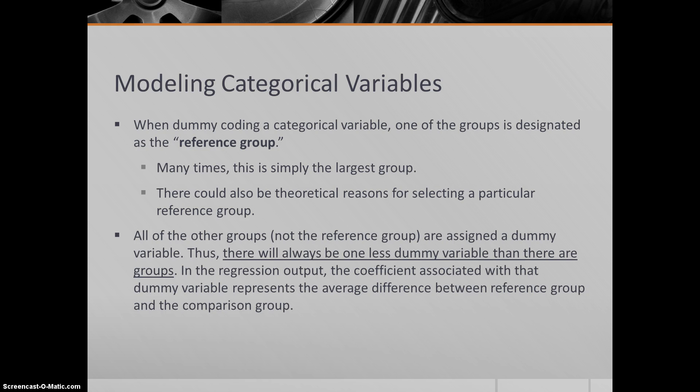Then when we run the regression model, in the output, the coefficient associated with each dummy variable represents the average difference between the reference group and the comparison group. If I were looking at male and female, let's suppose female were my reference group - maybe I had the most females in my sample. There would be a dummy variable for the males, and that would represent the difference between males and females. Again, we'll see lots of examples of this. Take your time, rewatch as necessary until it kind of soaks in.